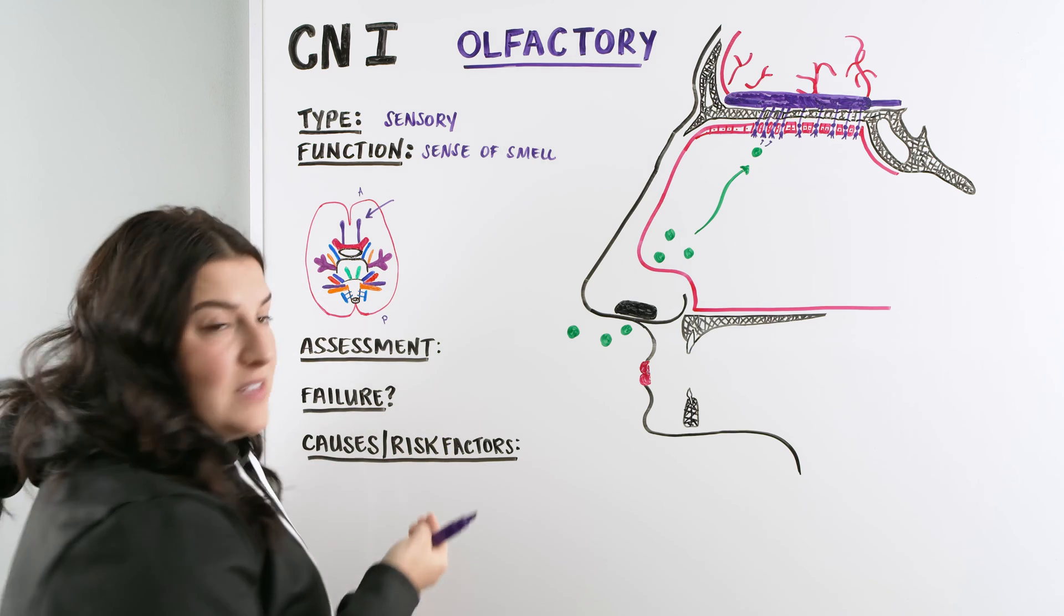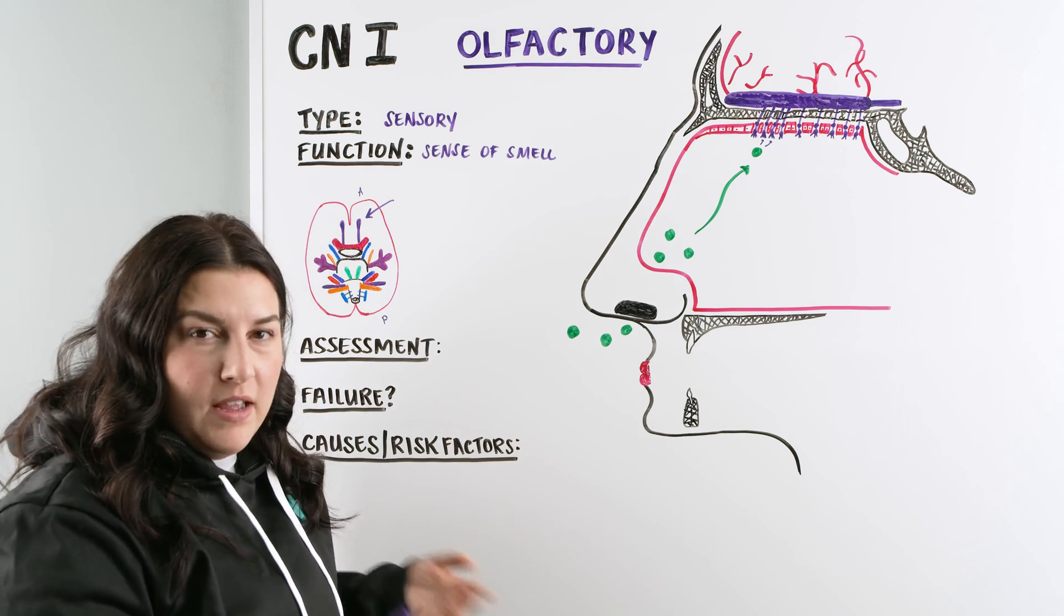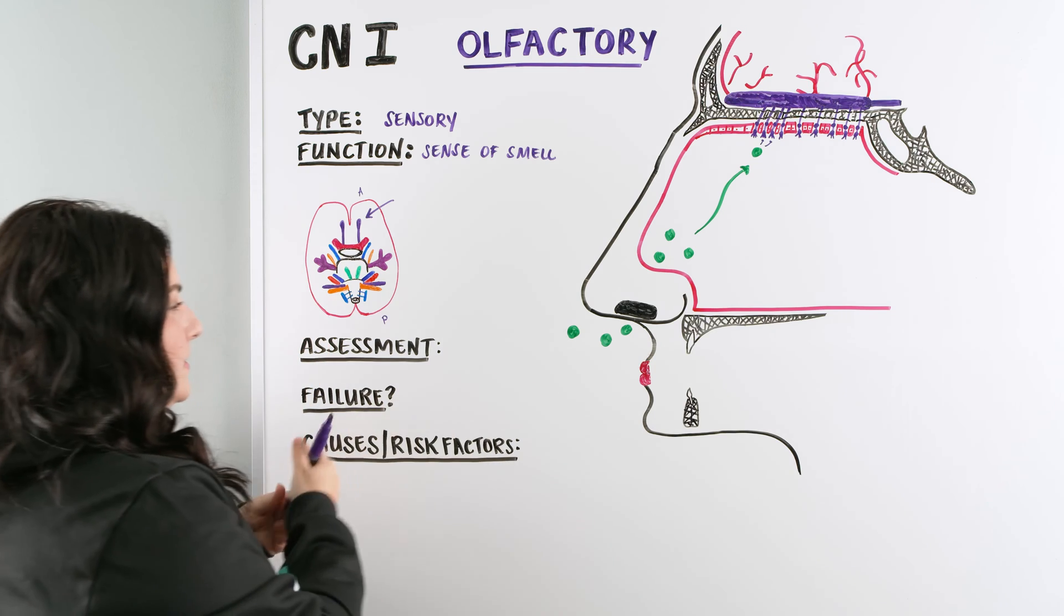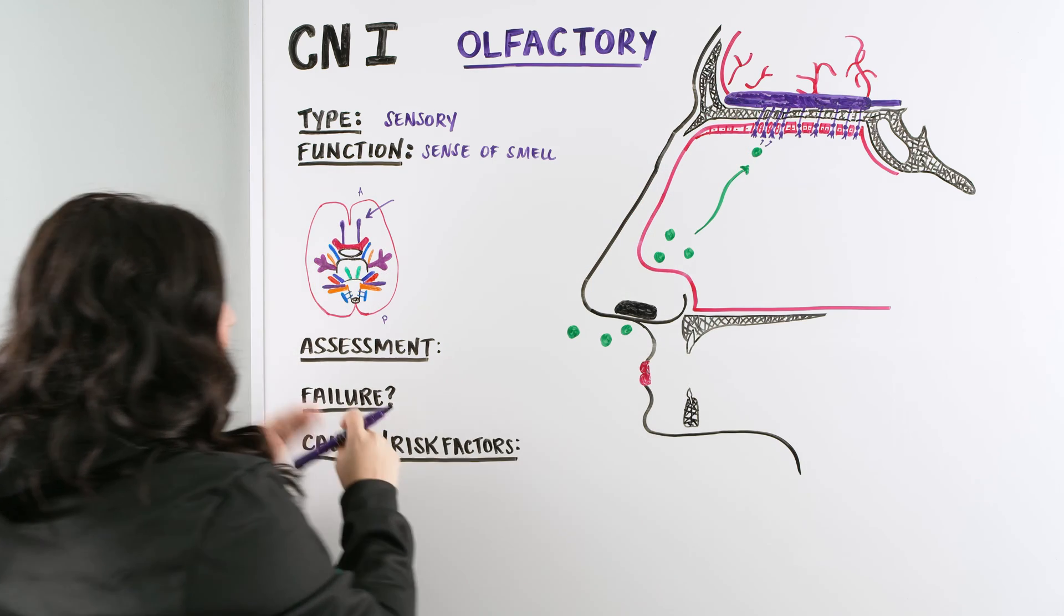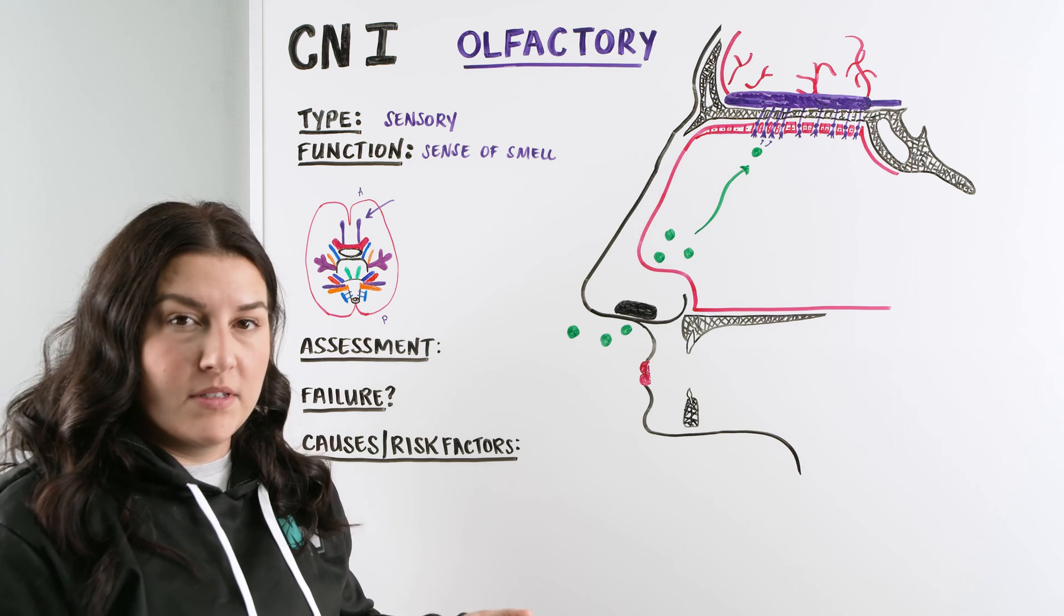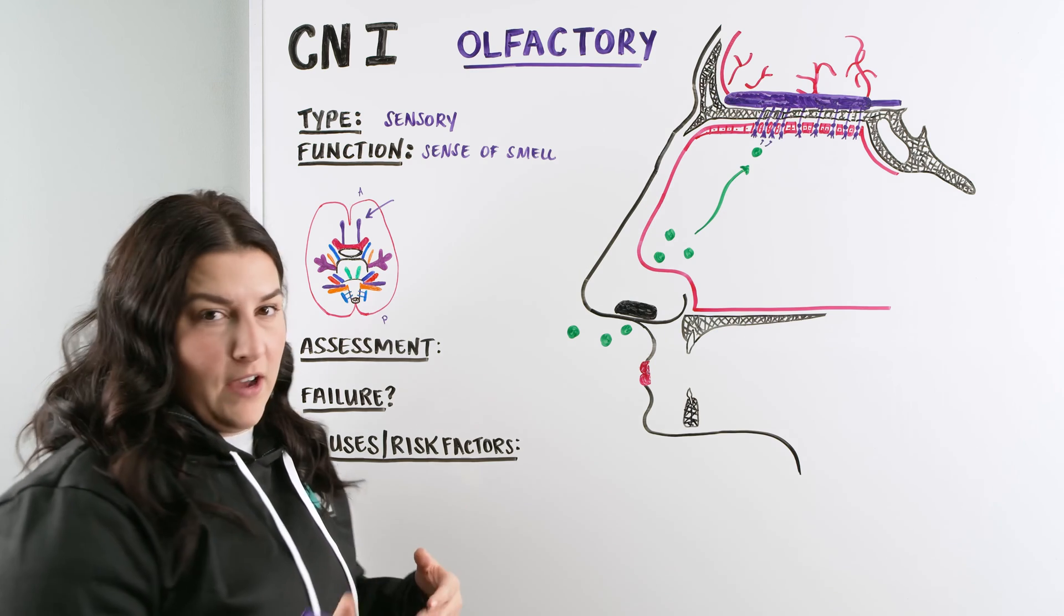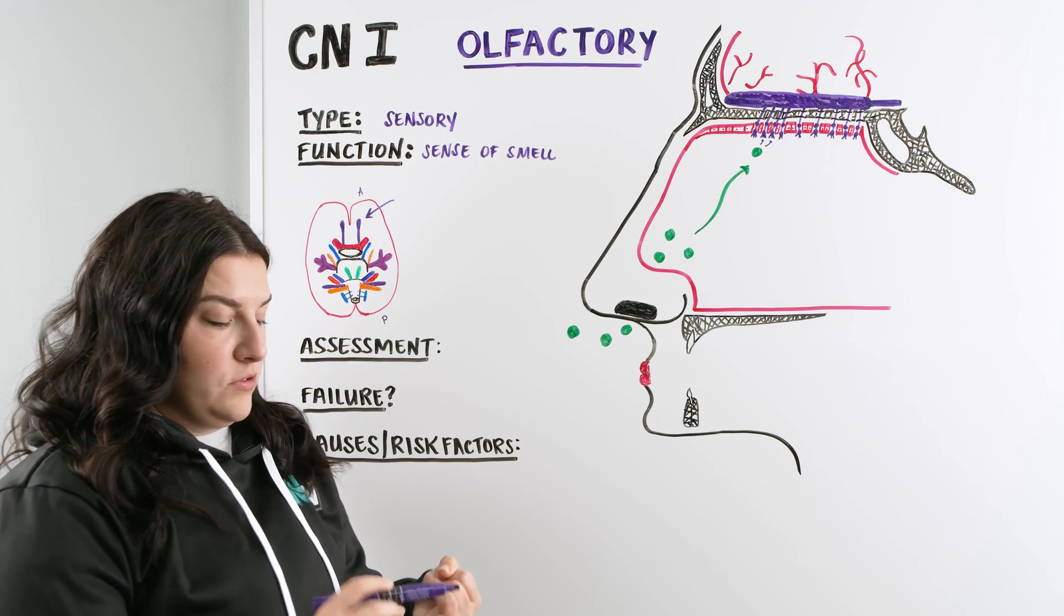So in order for us to assess a patient, if we're going to try to see if their olfactory nerve is working, how would we do that? If the sense of the assessment is to just give them a smell and to identify it. So what we're going to do is we're going to give them an identifiable smell. Ideally, it's going to be something that is readily identifiable to people. You hopefully have it around the hospital.